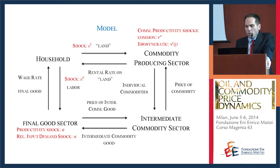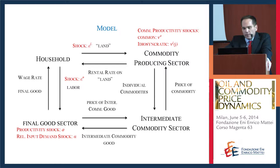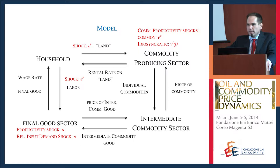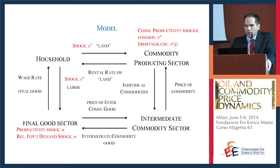The model is quite simple. We start with a household that supplies two inputs: labor to the final goods sector, and land — for want of a better word — to the commodity-producing sector. In the commodity-producing sector, there's a continuum of commodities that are bundled together into an intermediate commodity good and sold to the final goods sector. The final goods producer then uses labor from the household plus the intermediate commodity good to produce the final consumption good.